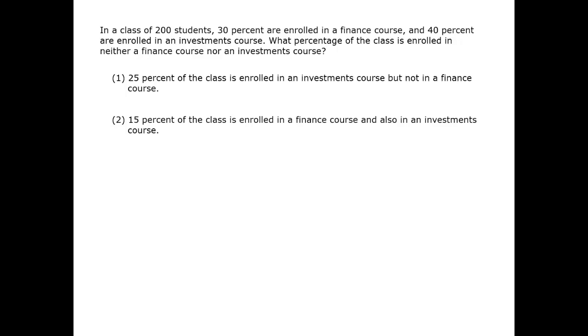In this question, we have two groups that have overlapping members. Therefore, it's going to be a perfect application of the equation T equals G1 plus G2 minus B plus N.